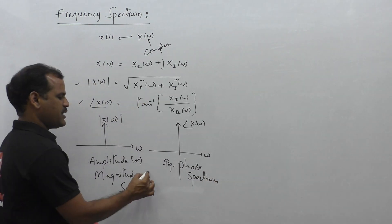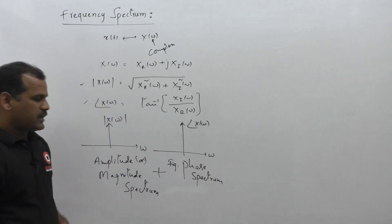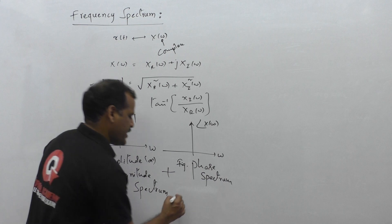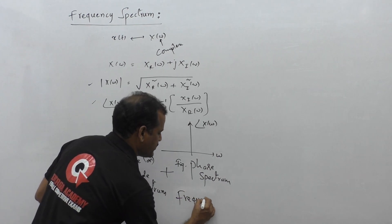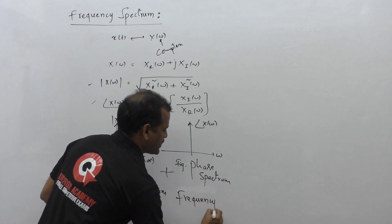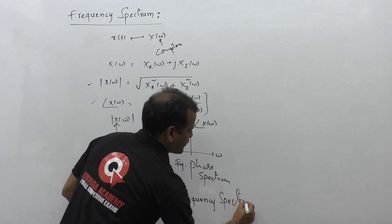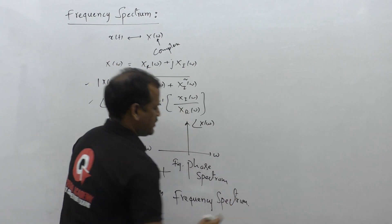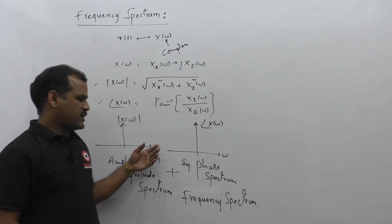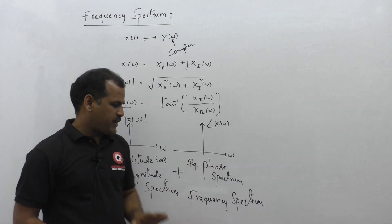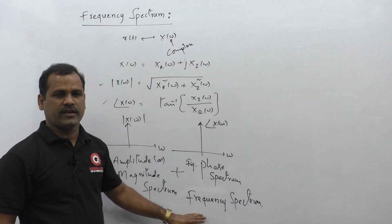Commonly, these two graphs together are taken as the frequency spectrum of the given signal x of t. So the meaning of frequency spectrum for a given signal is: both the magnitude spectrum and phase spectrum combined are taken as the frequency spectrum for that signal x of t.